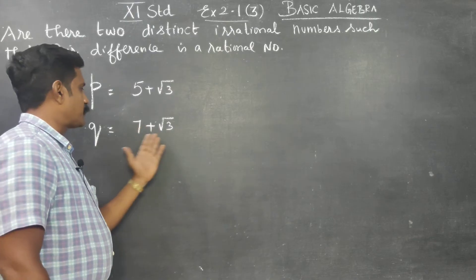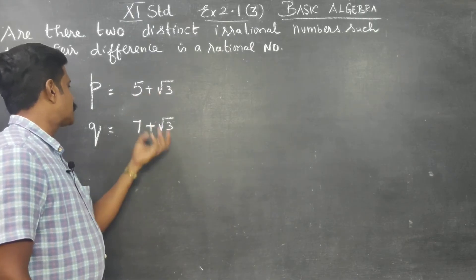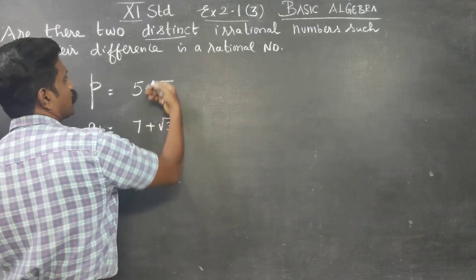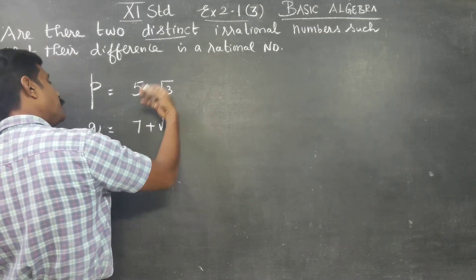5 plus root 3 and 7 plus root 3 are two best examples of distinct numbers. These two are different, 5 plus root 3, 7 plus root 3.